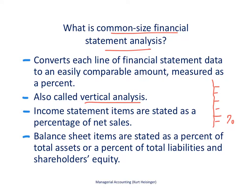The income statement items are stated as a percent of net sales — net sales is the key there. In other words, we'll take cost of goods sold as a percent of net sales, operating expenses as a percent of net sales, and net income as a percent of net sales. So for the income statement, items are stated as a percent of net sales.